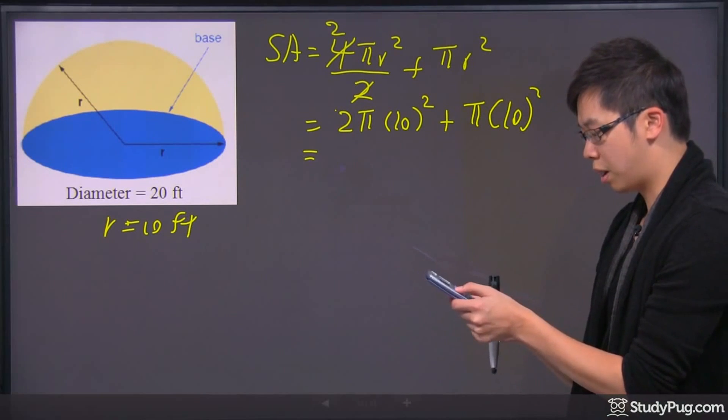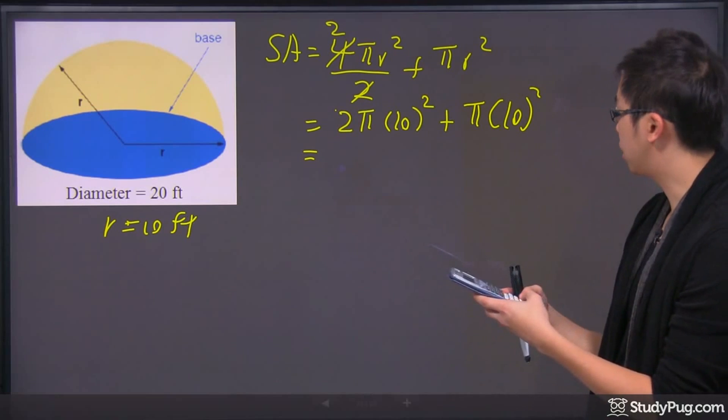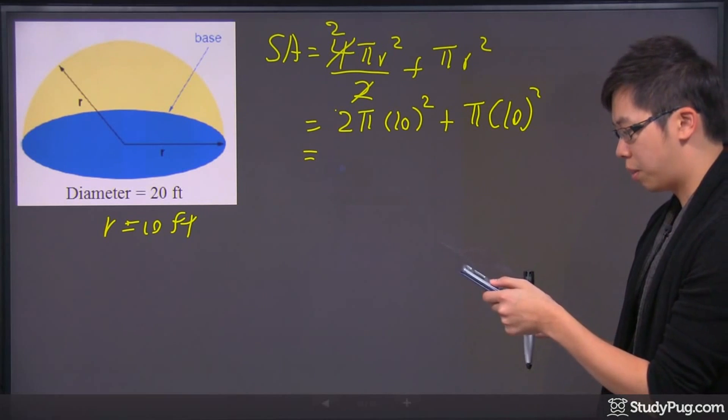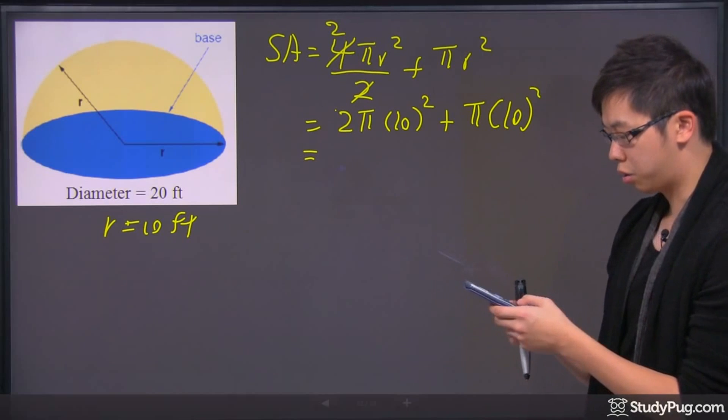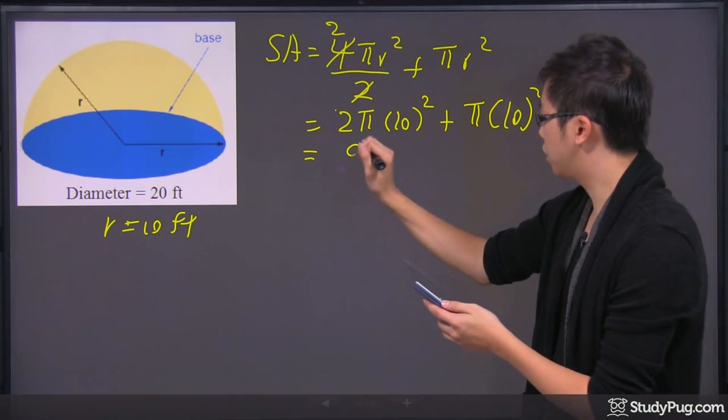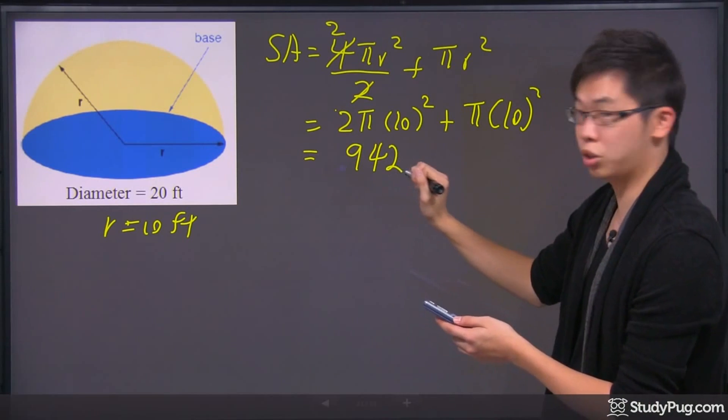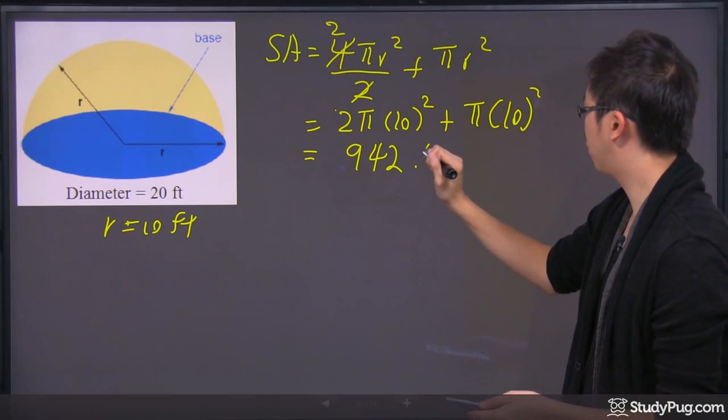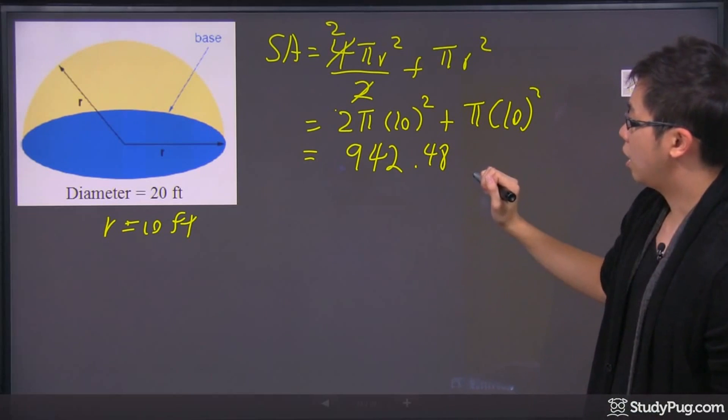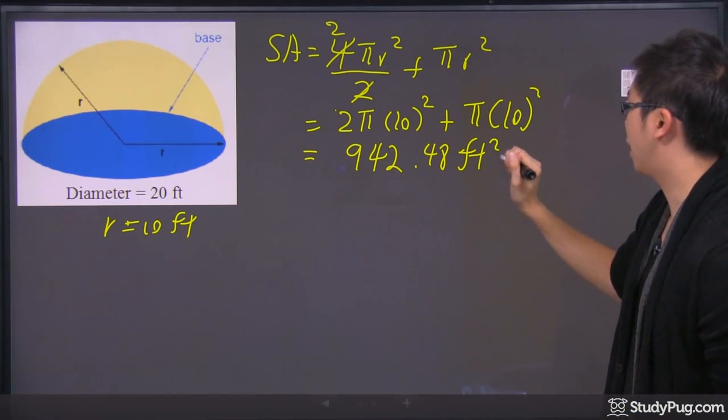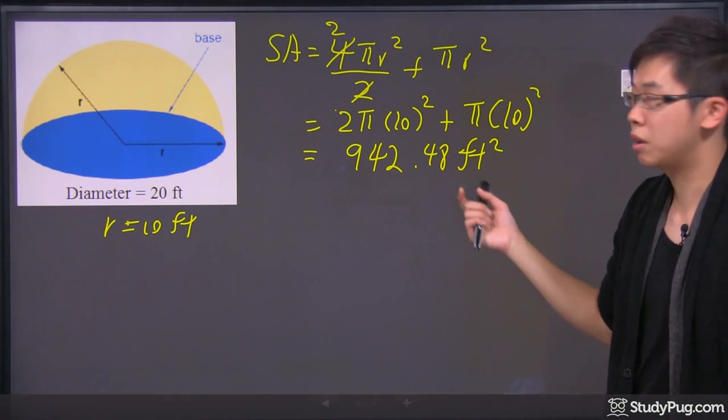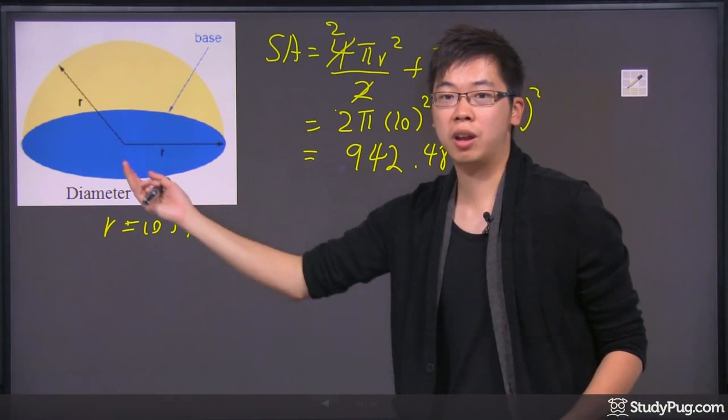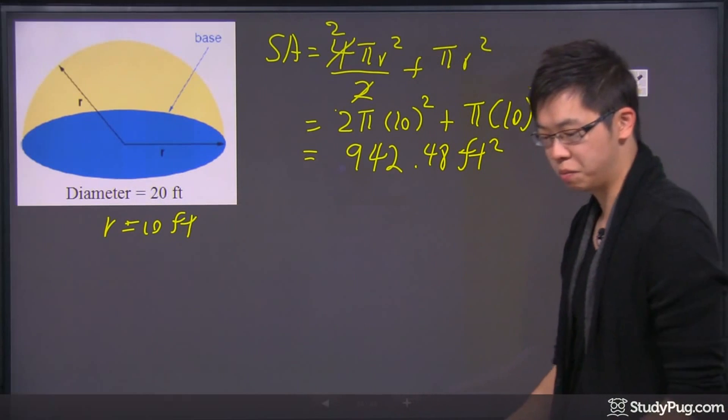We got 2 times π times 10 times 10, plus π times 10 times 10 again. So we got a nice number right here, 942.48. And it's going to be feet squared. And that is the final answer for the surface area. So you have to add an extra circle area for the half a sphere.